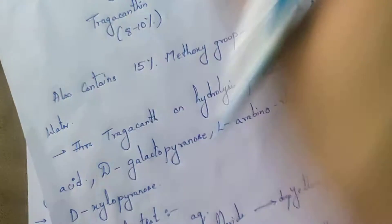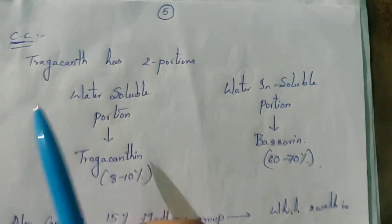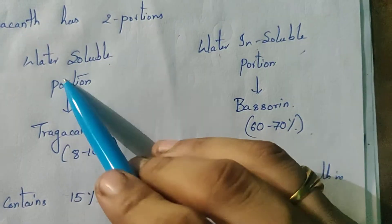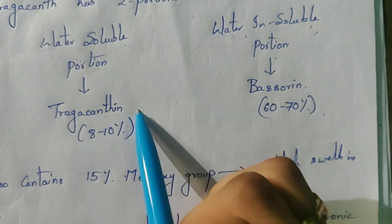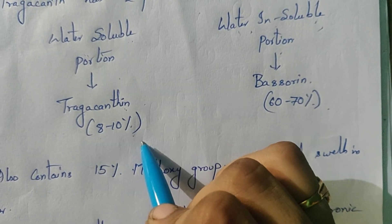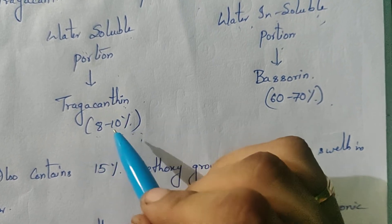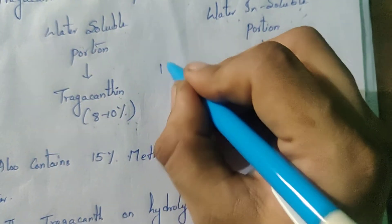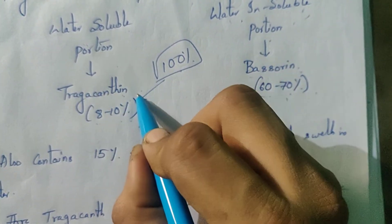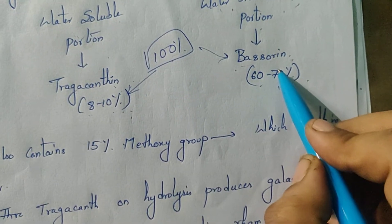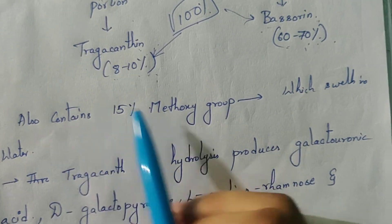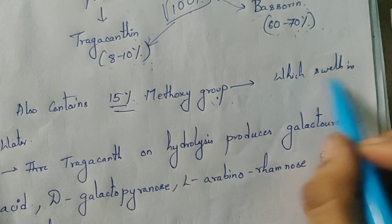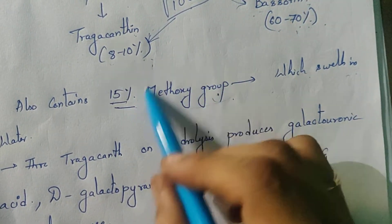Coming to chemical constituents. Tragacanth has two portions: a water-soluble portion and a water-insoluble portion. The water-soluble portion is known as tragacanthin, which is about 8 to 10% of the whole drug. The water-insoluble portion is known as bassorin, which constitutes about 60 to 70% of the whole drug. It also contains 15% methoxy group, which swells in water — this drug swells in water because it has a methoxy group in it.